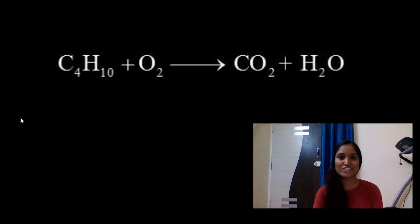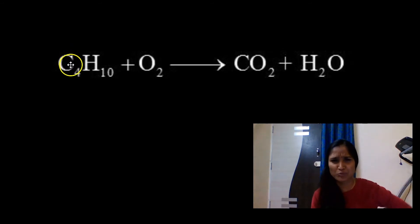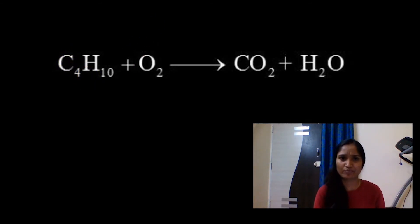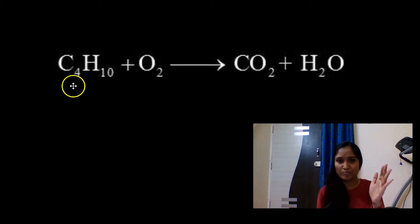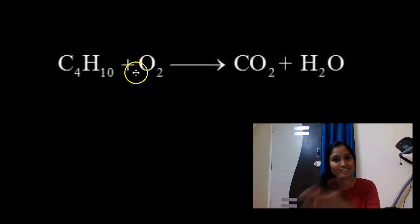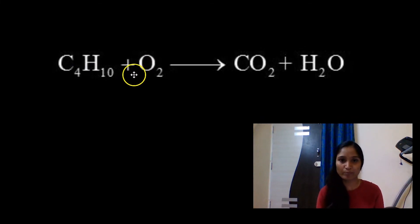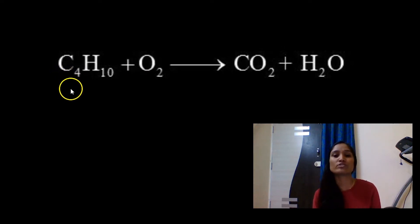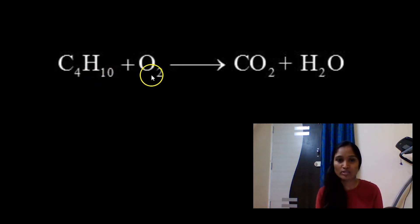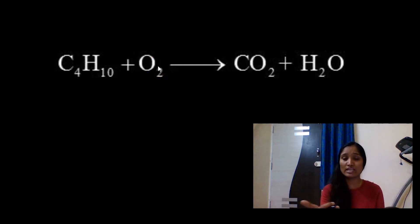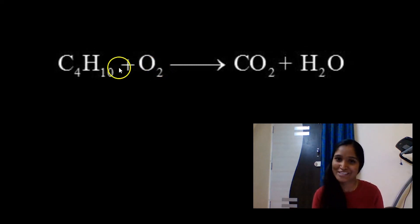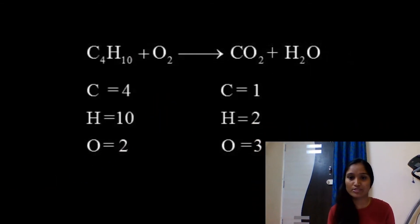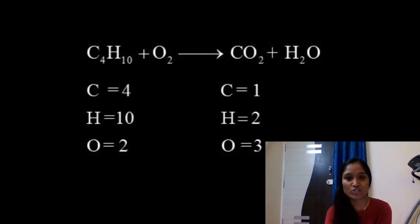For C4H10, follow the procedure. First, identify the left-hand side and right-hand side — left-hand side is here, right-hand side is here. Now count the number of atoms on both sides. You see carbon, hydrogen, and oxygen on both sides, but the numbers may vary. On the left: 4 carbons, 10 hydrogens, 2 oxygens. Count the right-hand side the same way quickly.